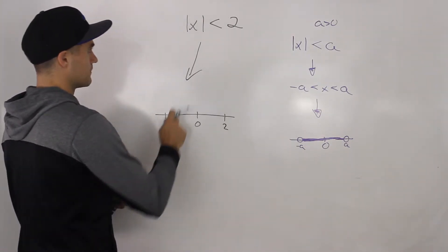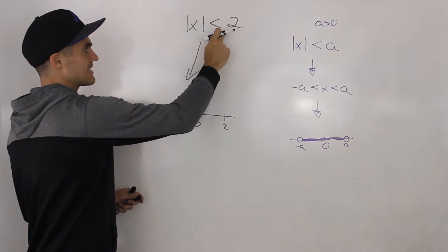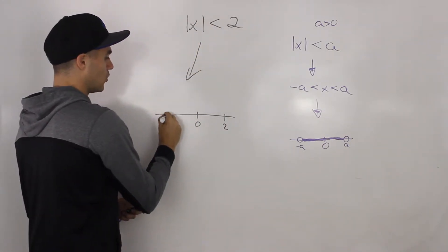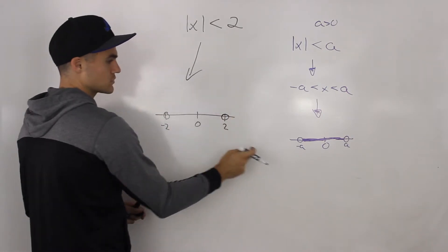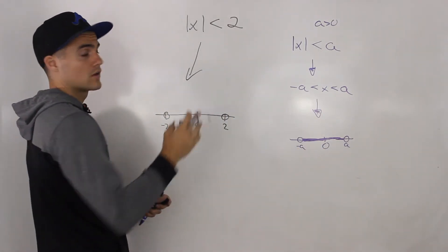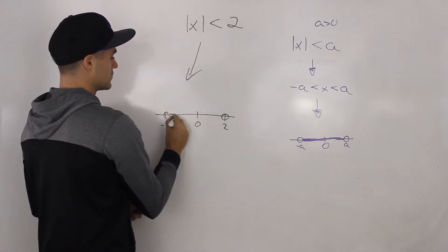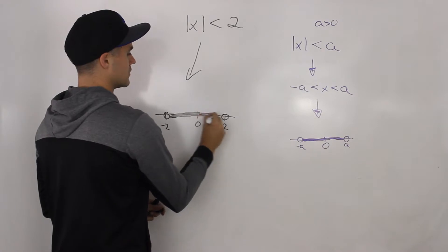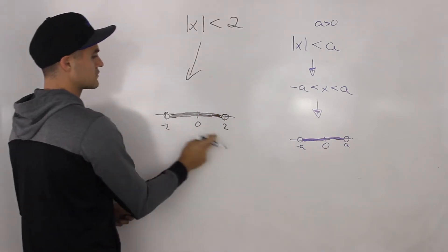Because this is a less than sign, not a less than or equal to sign, there are holes at negative 2 and positive 2. Notice there are holes at negative a and positive a, it's not inclusive. It's all the values between negative 2 and positive 2.